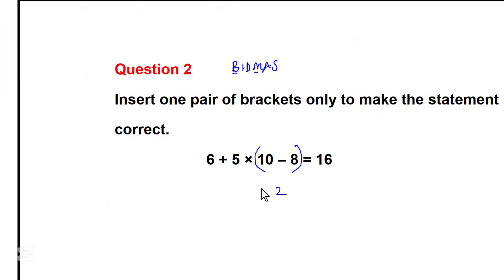Doing the bracket first means 10 minus 8 will be equal to 2. We've got times 5, and we have plus 6. According to BIDMAS, multiplication comes first before addition. So, I'm going to multiply 5 by 2. 5 multiply 2 is going to be equal to 10. We've got plus 6. So, 6 plus 10 is equal to 16.